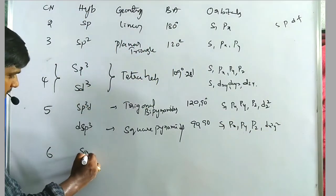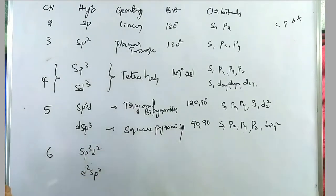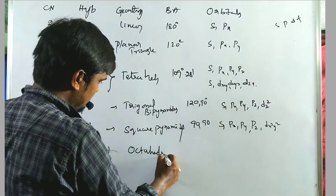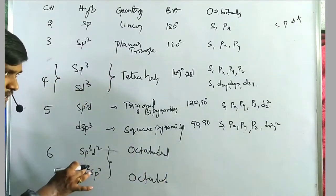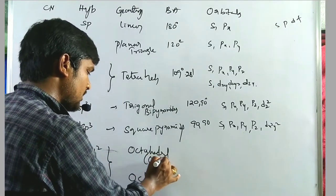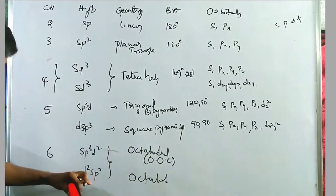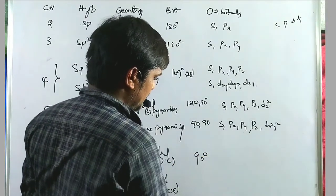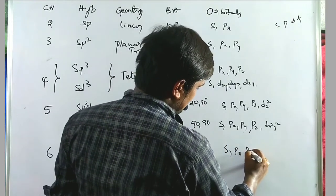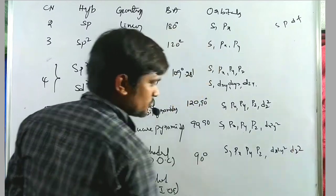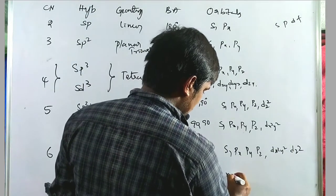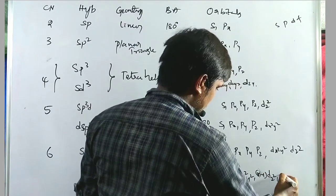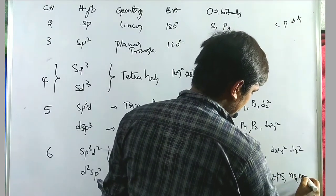For coordination number 6: sp³d² and d²sp³ both give octahedral geometry with bond angles of 90°. The orbital contribution for sp³d² is s, px, py, pz, dx²-y², dz². For d²sp³, it uses (n-1)d orbitals: (n-1)dx²-y², (n-1)dz², ns, npx, npy, npz. If hybridization starts with an ns orbital of the same principal quantum number, it forms outer orbital complexes. If it starts with the (n-1)d orbital, it forms inner orbital complexes.